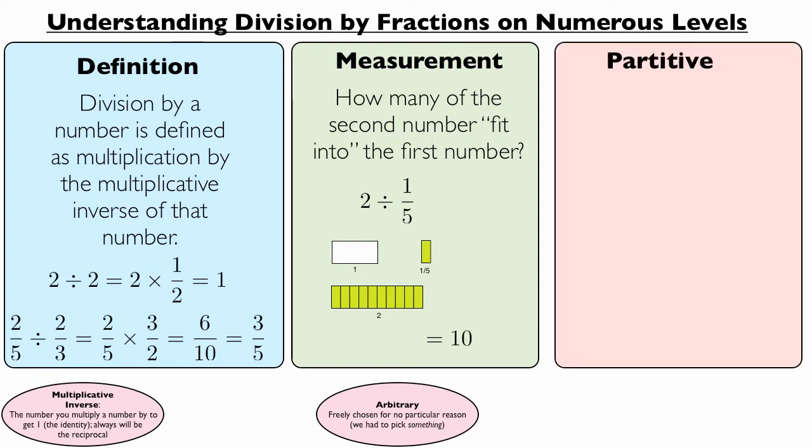The third model is called the partitive model. And this is going to be confusing just by reading the text, but it'll be much clearer when you see the example. Find the number such that the fraction of it is the first number. The fraction is going to be the second number listed. And the example will clear it up.